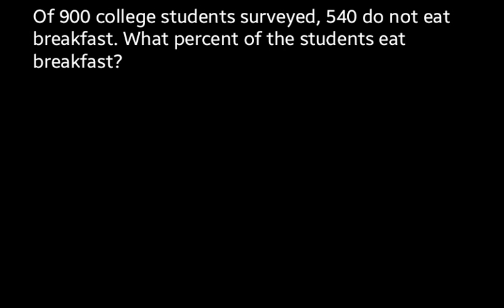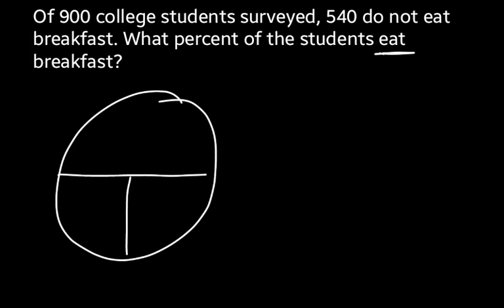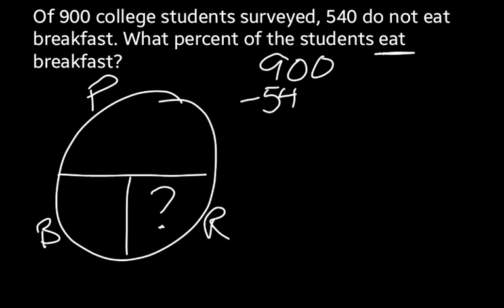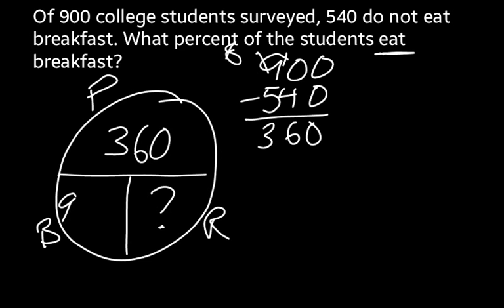For the next question: of 900 college students surveyed, 540 do not eat breakfast. What percent of students do eat breakfast? This is a bit of a trick question — it gives you the number who do not eat breakfast, but wants to know the percentage who do. Drawing our PBR circle, we're going to be finding the rate since there's no percentage in the problem. We won't use 540 because that's how many don't eat breakfast. Instead, we subtract: 900 minus 540 equals 360. So 360 students do eat breakfast out of a total of 900.